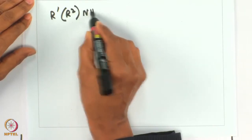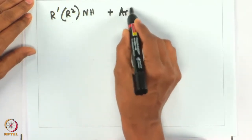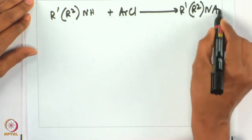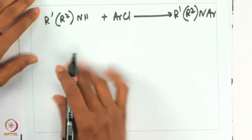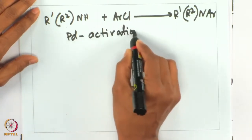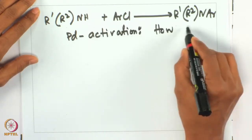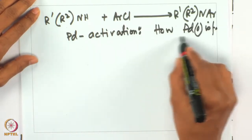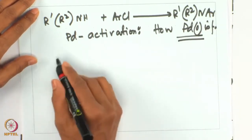Let us look at the palladium salts or palladium sources that one can use for these reactions. For the palladium-catalyzed carbon-nitrogen bond formation reaction - with R1R2NH amine reacting with an aryl halide to give R1R2N-Ar - the main question is: how is palladium activation happening? How is palladium(0) formed during this reaction?